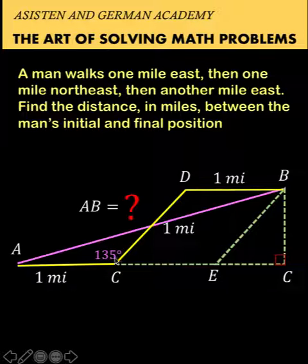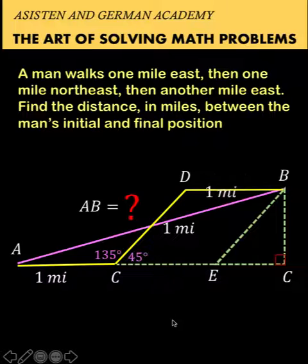Since the angle here is given to be 135 degrees, then this angle is 180 minus 135, which is 45 degrees. Since the length of DB is one mile and quadrilateral DBEC is a rhombus, then opposite sides are equal. CE must also be one mile and BE must also be one mile.